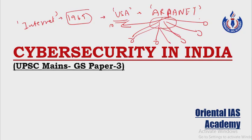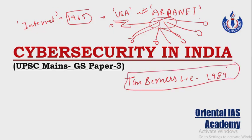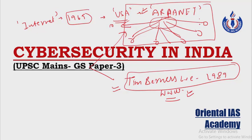Internet was created in 1969 and the credit goes to the USA. It was part of a US defense program and was initially named ARPANET. Through this defense program, the US government was trying to establish a communications network between different departments where information could be simultaneously shared or pooled so that any department could access it at any time. This was how the concept of the internet arose. Initially it did not gain much popularity, but its popularity grew — and in 1989, the World Wide Web was invented.